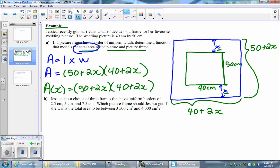Okay, so now that we have produced a function that models the situation, we want to answer part B. Part B says Jessica has a choice of three frames that have uniform borders of 2.5 centimeters, 5 centimeters, and 7.5 centimeters. Which picture frame should Jessica get if she wants the total area to be between 3,500 and 4,000 square centimeters?